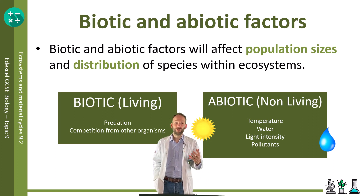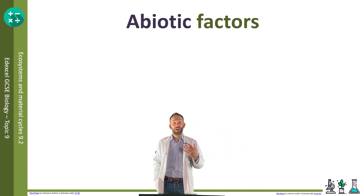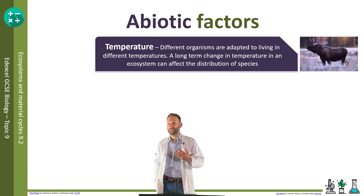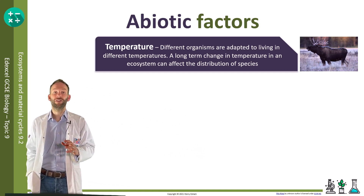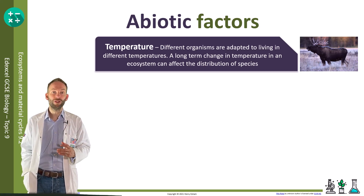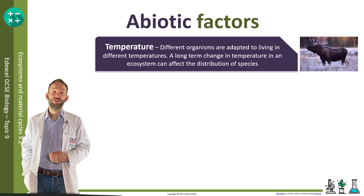Looking at the abiotic factors first: temperature. Different organisms are adapted to living in different temperatures. A long-term change in temperature in an ecosystem can affect the distribution of a species. For example, moose are moving further north due to warming temperatures.